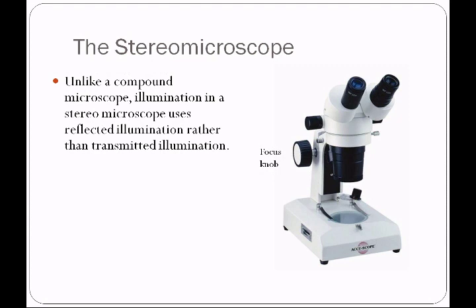For example, we can look at a penny or your fingernail. Because the light is going to be reflected from the specimen instead of having to go through it, we get a nice 3D image. The 3D image is achieved by having two eyepieces, so you're going to look through both oculars, adjusting the interpupillary distance by moving the oculars closer together or further apart.